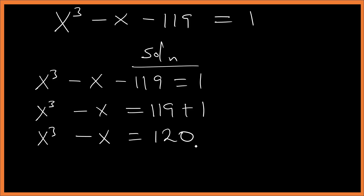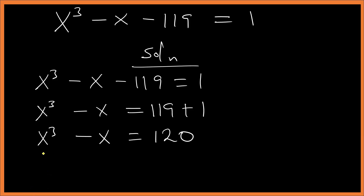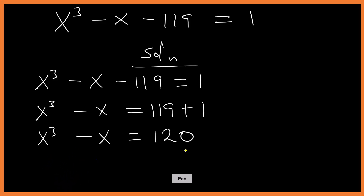Now we know that something cubed minus that same value can give us 120. If we plug in 5: 5³ - 5 = 125 - 5 = 120. So I have x³ - x = 120.